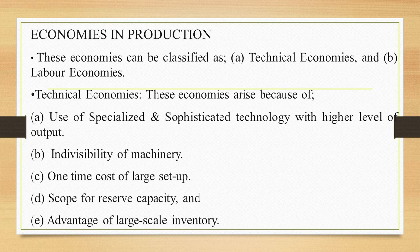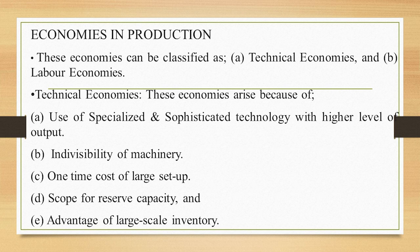Another technical economy is indivisibility of machinery — machinery is not for one item only; it produces a certain number of items. If you produce less you don't get the advantage, as the entire machinery will operate regardless. Then there is the one-time cost of large setup: if output is at a higher level, a large technical setup supported by computers and automatic machines can be established, giving an advantage to the producing firm. There is also scope for reserve capacity, which is important in times of need.